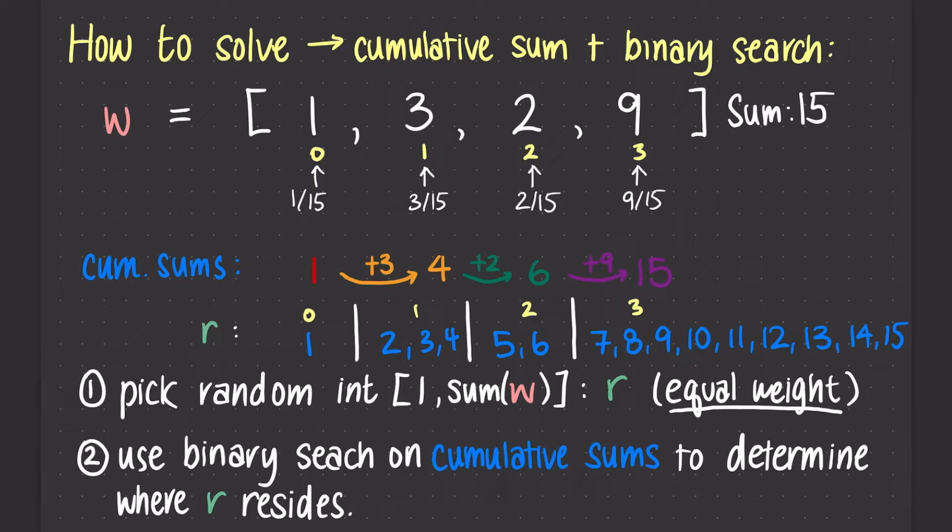If r were to be either 5 or 6, it would fall under index 2's cumulative range, giving us a 2 out of 15 chance for index 2 to be selected.